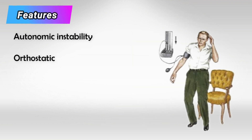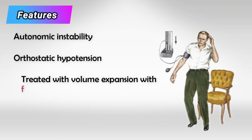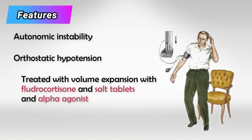However, both disorders will present with orthostatic hypotension, and this is the main issue that you have to treat. We treat it with volume expansion — we give the patient salt tablets or salt, fludrocorticoids, or alpha agonists. And this is more than enough to treat the orthostatic hypotension.